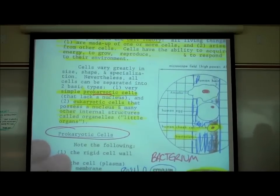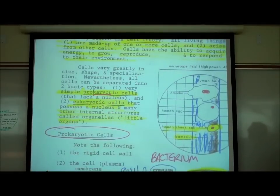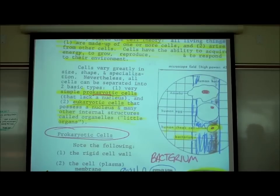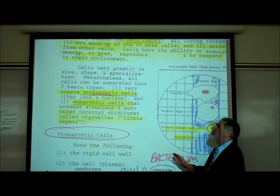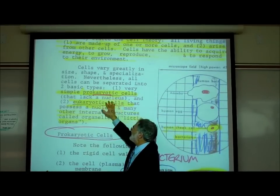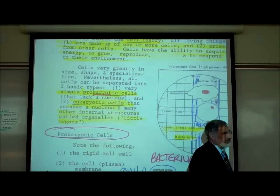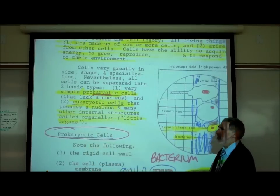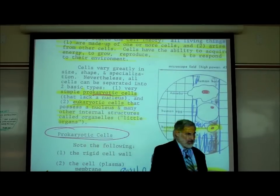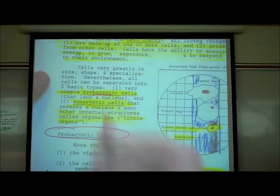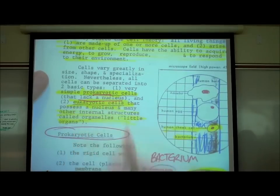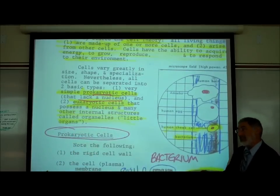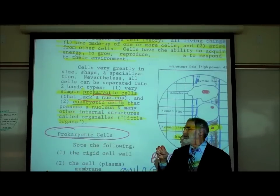Cells vary a great deal in size and shape. When we look at cells, we can divide them into two broad categories: prokaryotic cells and eukaryotic cells. The root 'karyo' means nucleus. Prokaryotic cells lack a nucleus — these are usually very small cells that lack a nucleus and most other internal organelles.